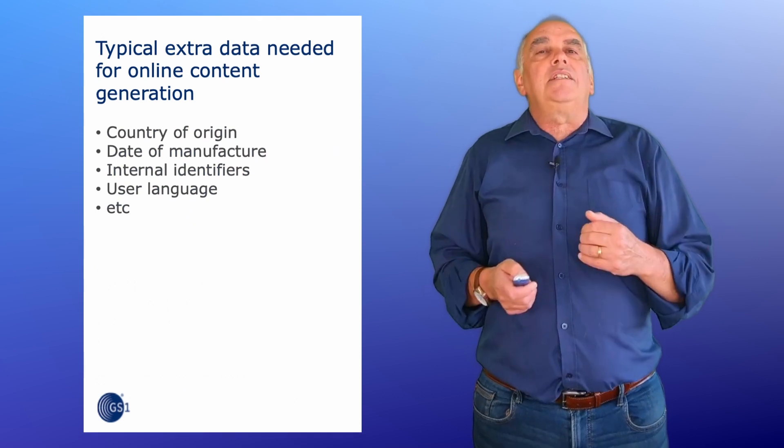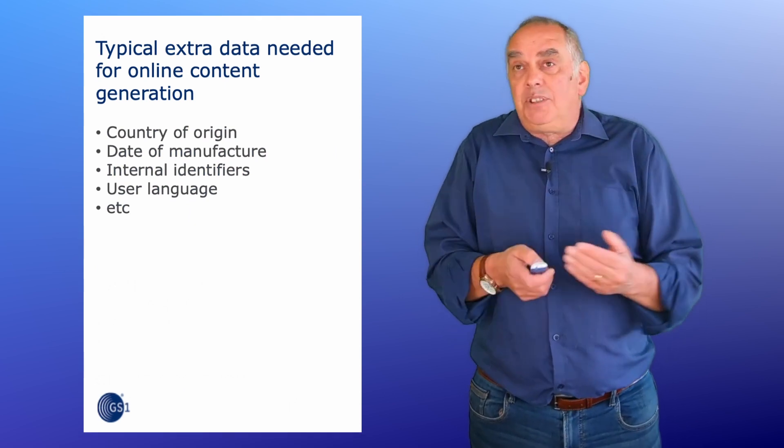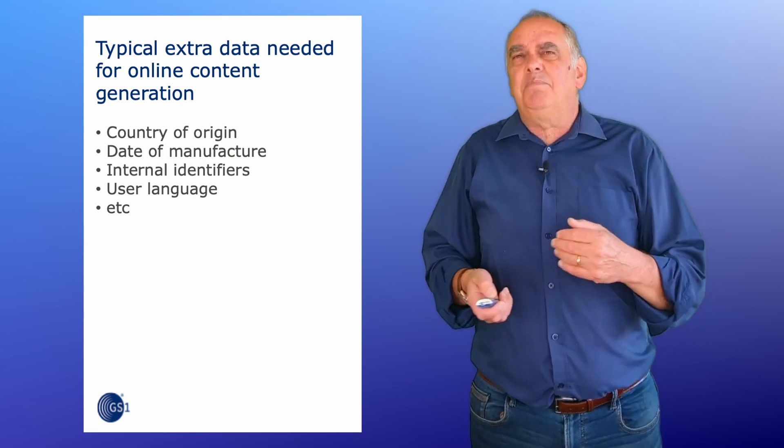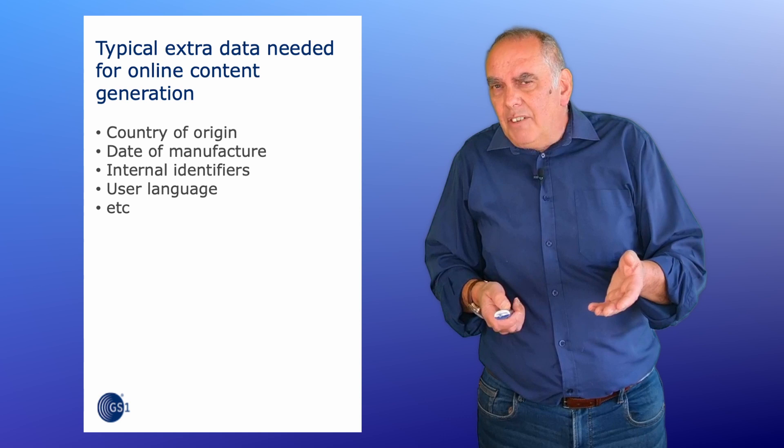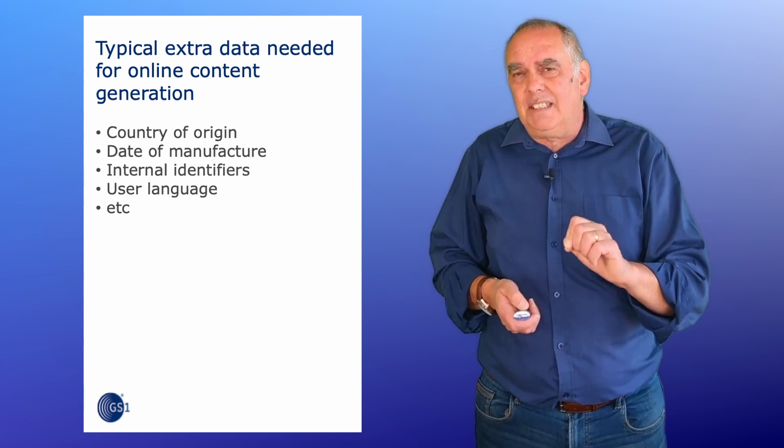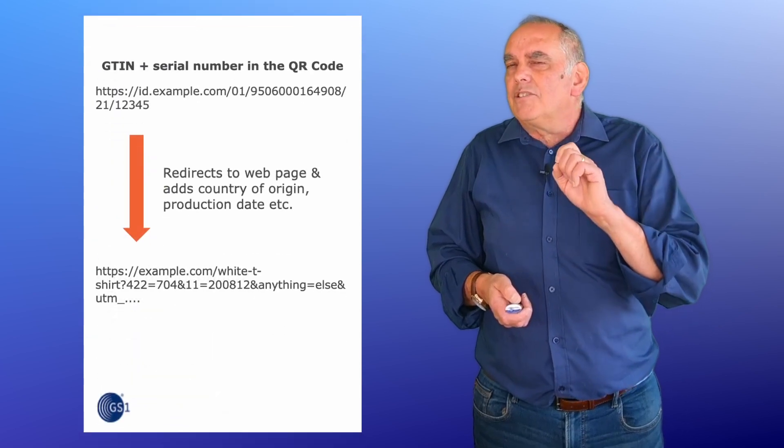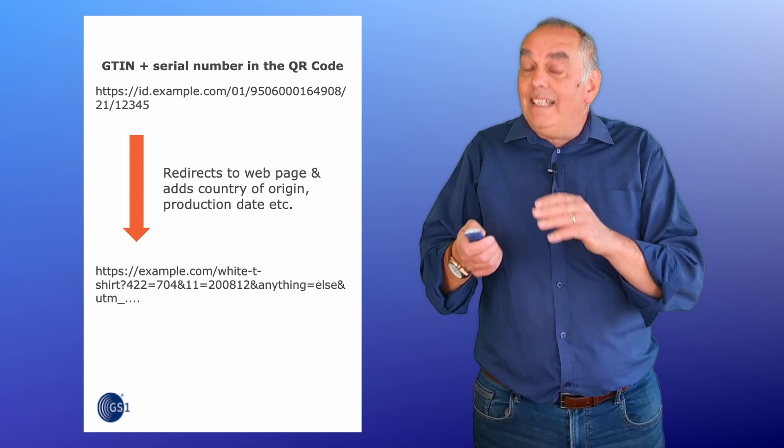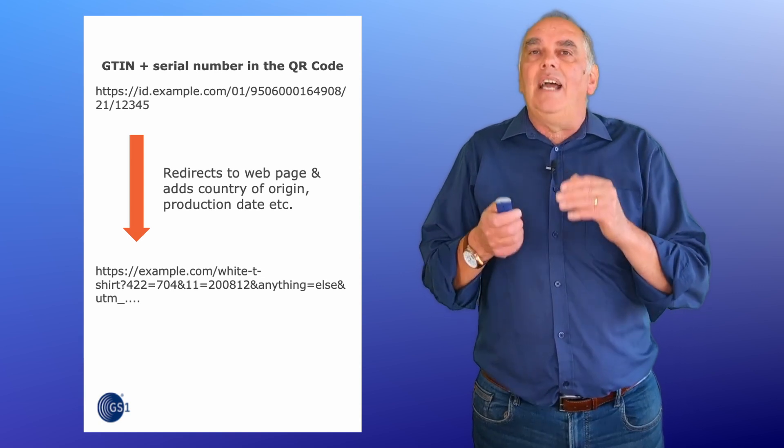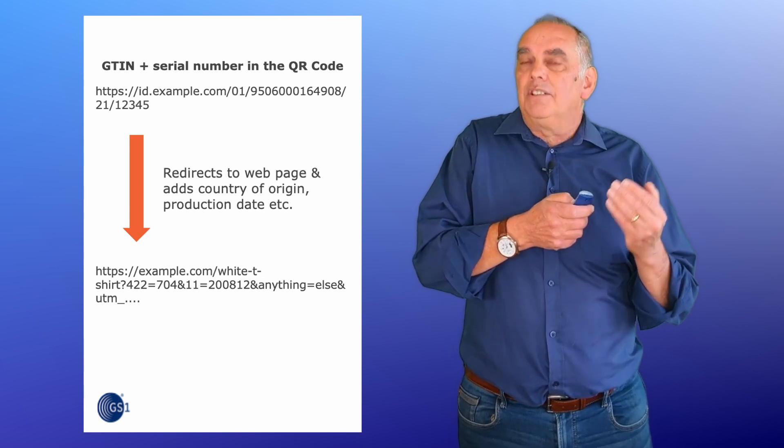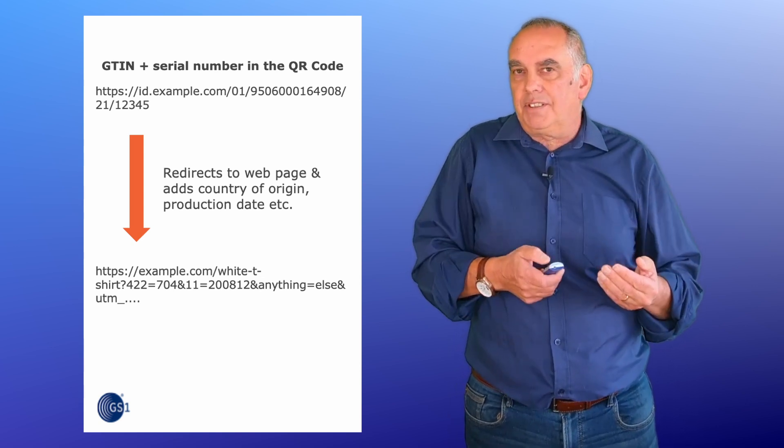Your online content management system might need all sorts of extra pieces of data to make it work. Things like a product's place of manufacture, a date of production, the language variant to use, and more. But that's nothing to do with product identity. So use the redirection server to draw on its own data for anything extra that's needed to send a more detailed query to the online content generation system.